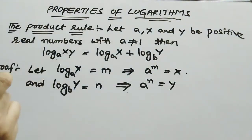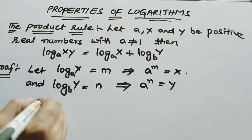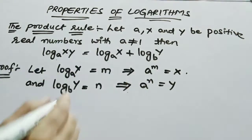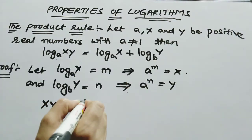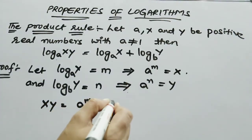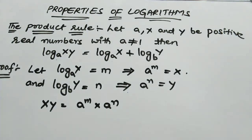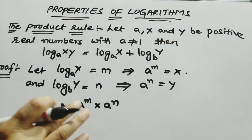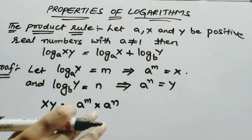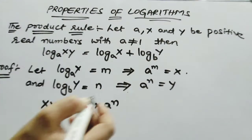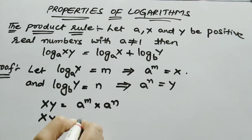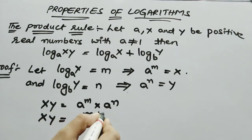Then what is the product? Product means x times y. If you multiply x and y, you get a to the power of m into a to the power of n. Using the exponential formula, x·y equals a to the power of m plus n.